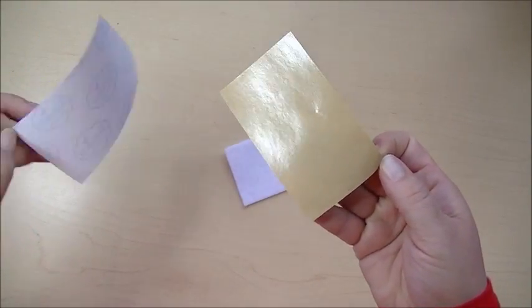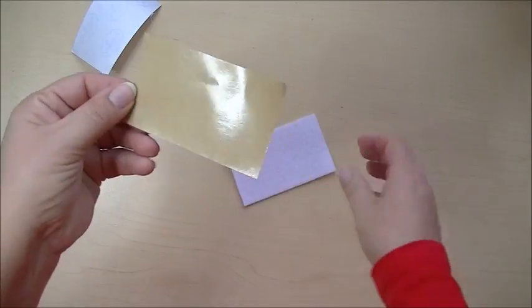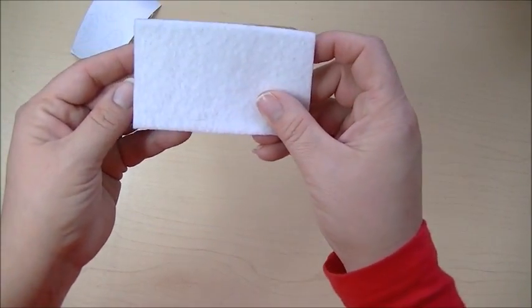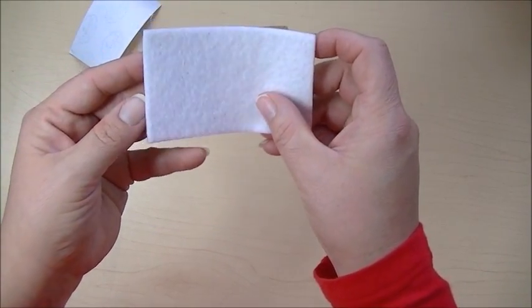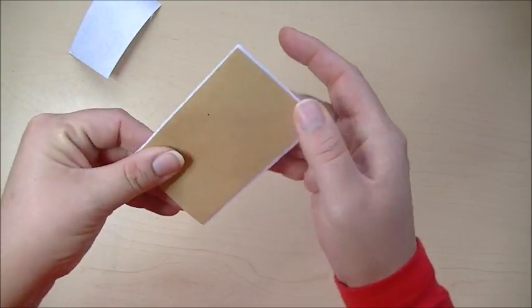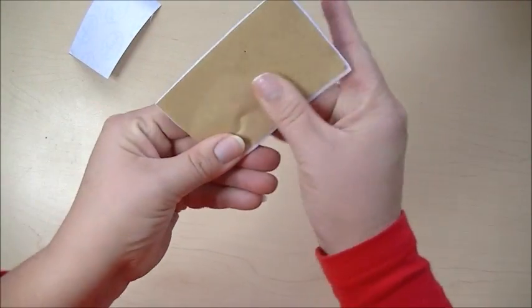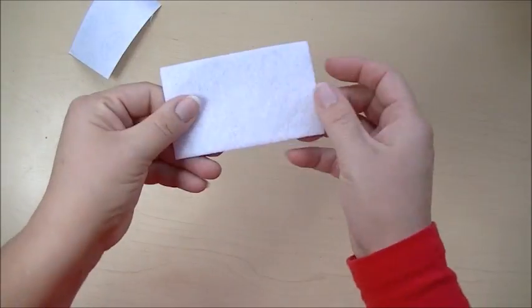So this peels off, it's double-sided, so one side will peel off, and this side is very sticky. And I'm just going to stick this right to the back side of my piece of felt. And I'm going to leave it just like that for now.